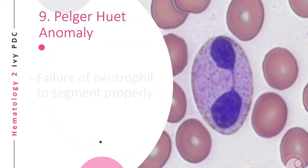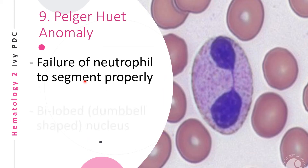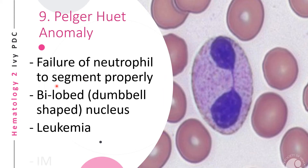In Pelger-Huët anomaly, there is a failure of the neutrophil to segment properly, leaving it only bilobed and connected by a segment — making it look like a dumbbell-shaped nucleus. This is seen in leukemia and is mostly seen in infectious mononucleosis.